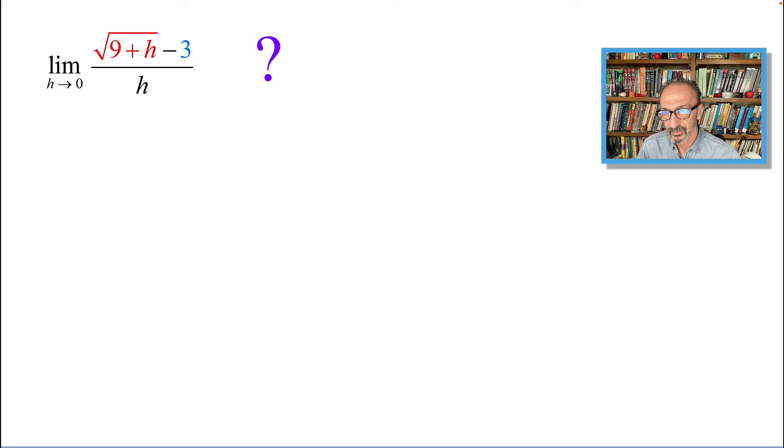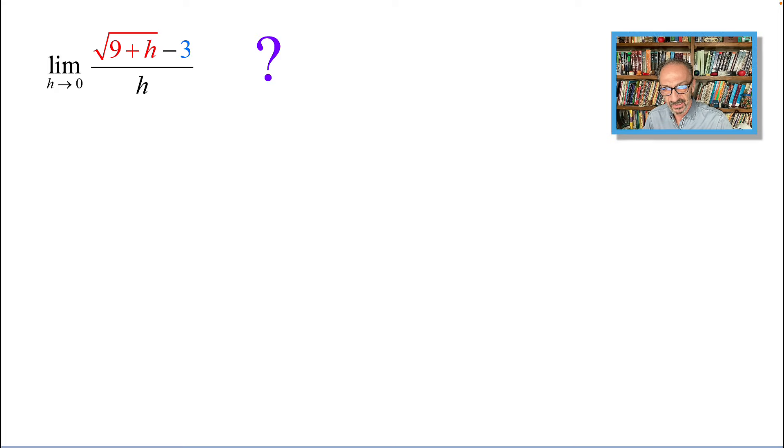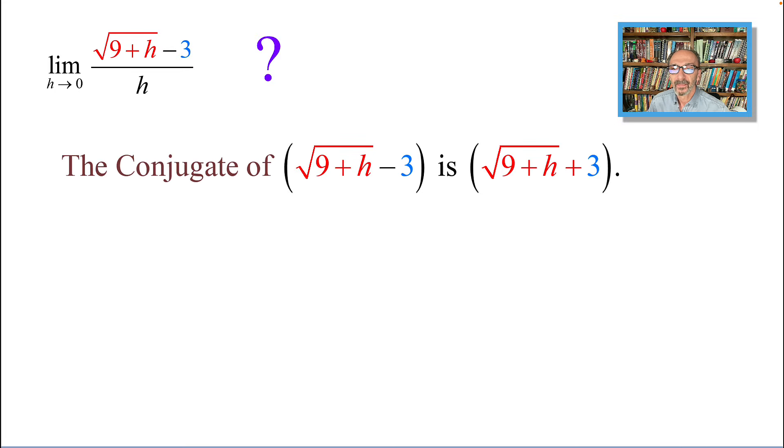Now for the limit that is shown on the screen, we're questioning if it does exist. The conjugate of square root of 9 plus h in red minus 3 in blue will be the same except minus changes to plus. As you can see, I use colors to help you stay focused, and I end up typing everything instead of writing everything on the whiteboard.